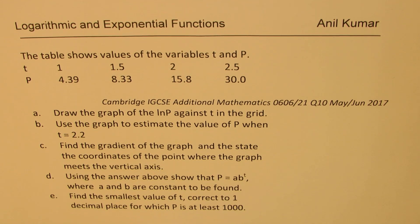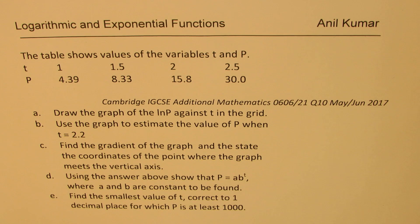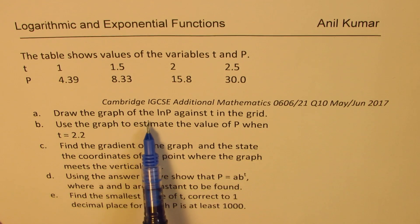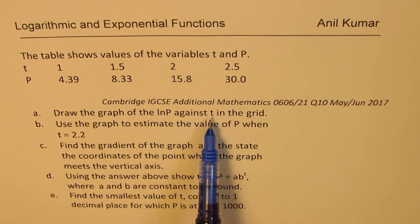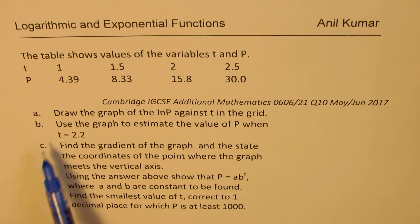The question is: the table shows values of the variables T and P. T: 1, 1.5, 2, 2.5. P: 4.39, 8.33, 15.8, and 30.0. We need to draw the graph of ln(P) against T in the grid.